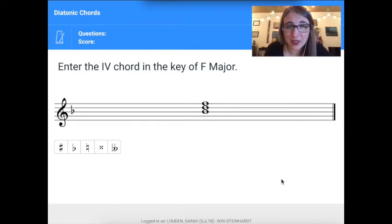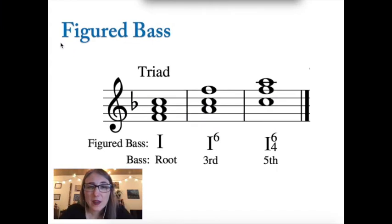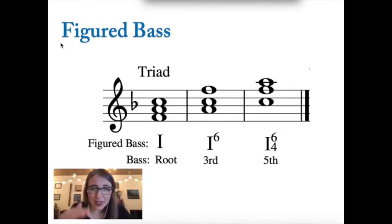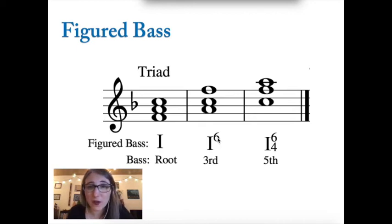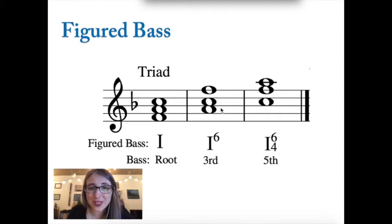If anything other than the root of the chord is the lowest sounding note, we say the chord has been inverted. When stacked neatly, we write the Roman numeral as normal. But if the third of the chord is the lowest sounding note, we call it a '6 chord' — for example, a I6 or V6. The name comes from the fact that when written in close position, you get a 6th above the bass. The intervals above the bass give you a 6 and a 3, but we just say '6 chord.'